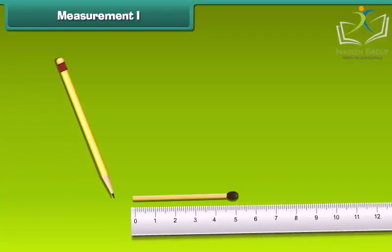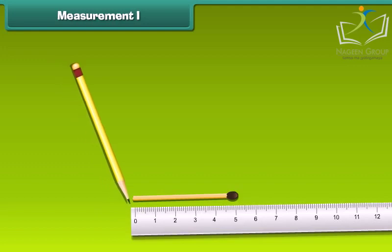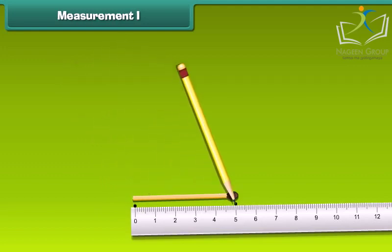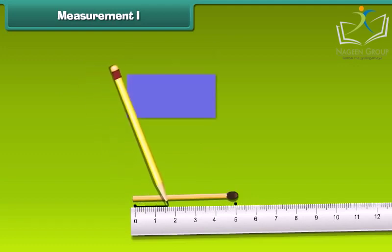Did you know how to measure the length of a matchstick with the help of a ruler? Place the matchstick near the ruler as its one end should be at 0. The number written is 5. Therefore, it is 5 cm long.